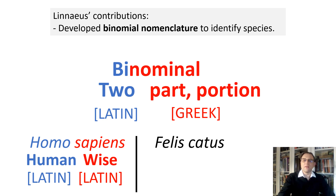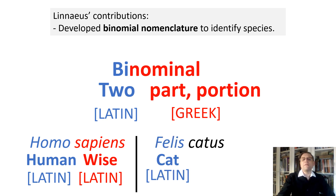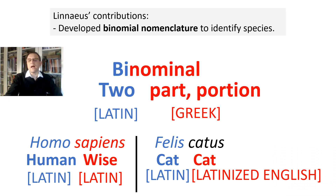The scientific name for the house cat is Felis catus. In Latin, Felis means cat, and catus is a Latinized Old English word for cat. So if we translate the scientific name Felis catus to English, it is simply 'cat cat.'